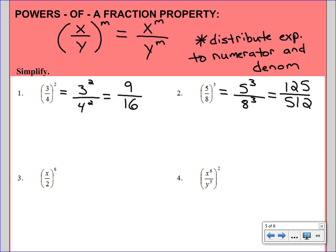Moving on to example 3. The only difference here is we have a variable, which actually makes it a little bit easier because we don't have to evaluate anything. You distribute the 6. We have x to the 6 over 2 to the 6. Expand that out. So x to the 6. And then here's where you would type in 2 to the 6 in your calculator. And we would end up with 64.